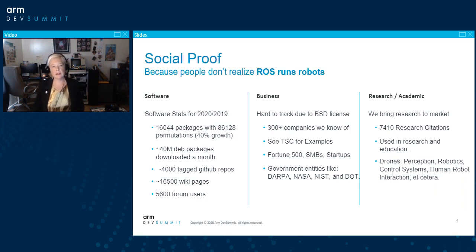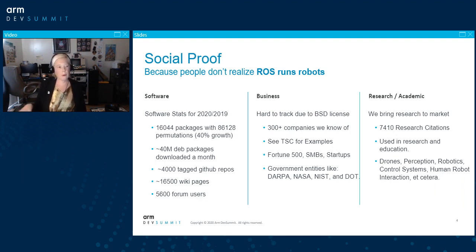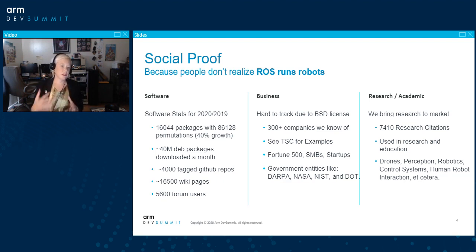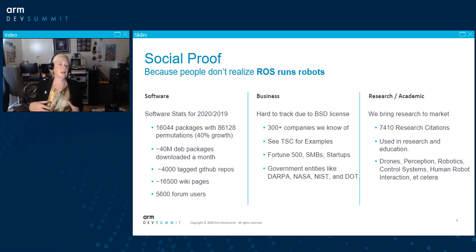I usually like to start with social proof, because if people have seen ROS in the past or have never heard of it, they don't really believe that this open source project is this large and pervasive in the community as it really is. So I like to start with some social proof so people understand this is something used by a ton of people, all over the world, in everything from research to production systems.